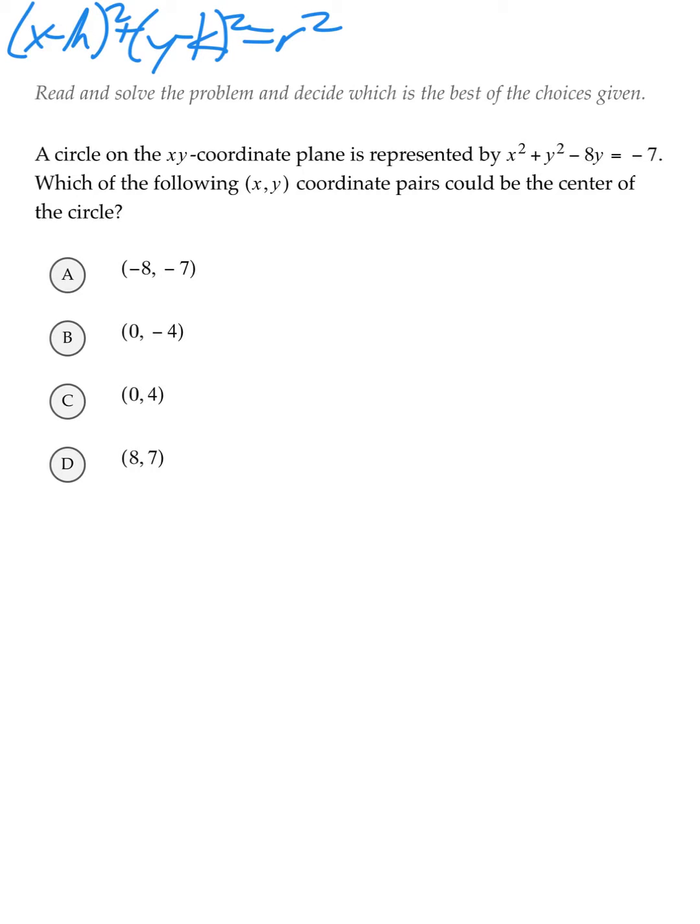This equation is useful because from it we can find the center and radius of the circle. The center can be found by taking the value of h and k in the equation and creating the coordinate point h comma k. And the radius can be found by just taking the value of r.